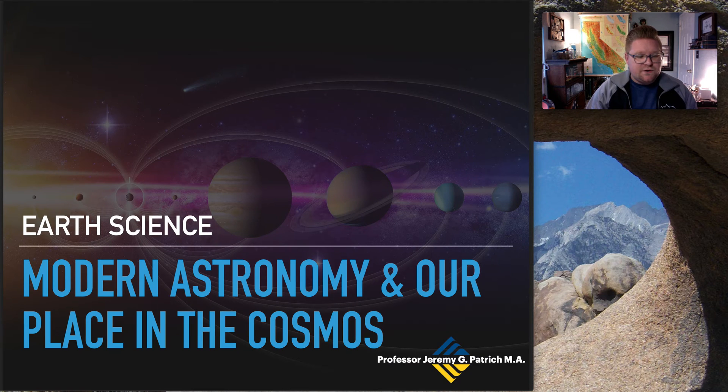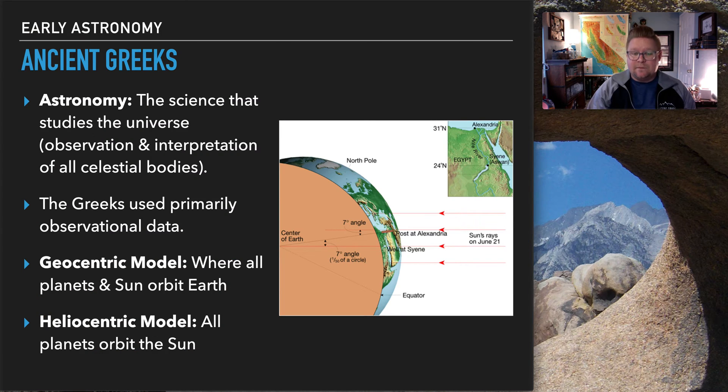So let's talk about modern astronomy, historic astronomy, and Her Place within the Cosmos. Let's start at the beginning with the Greeks. So early astronomy, especially observed by the Greeks, was an actual observed interpretation of what was out and above us within the visual aspect of the sky. So astronomy is a science that studies the universe, observation, and interpretation of all celestial bodies.